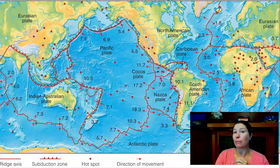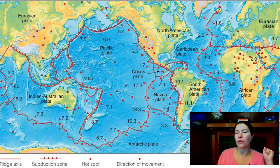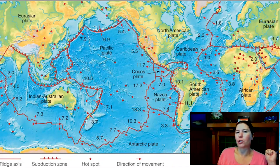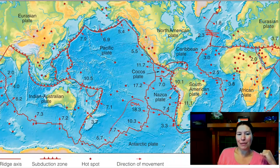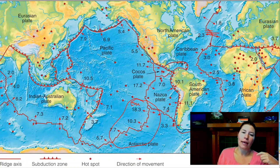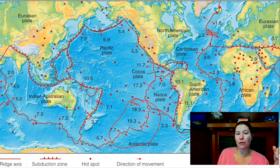This map shows the plate boundaries in red, delineating each major plate. The little triangle symbols with teeth represent subduction zones; there are also spreading ridges and hot spots shown. The arrows show direction of movement, and the numbers represent the annual amount of movement in centimeters. Down here is the East Pacific Rise—some of the fastest moving rock on Earth—moving apart at about 18 centimeters, or about six inches, per year.